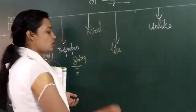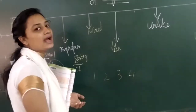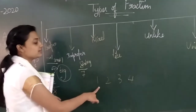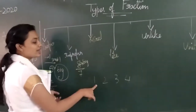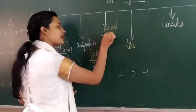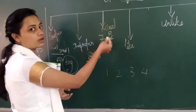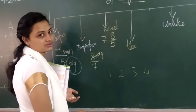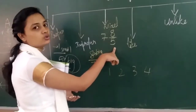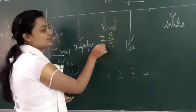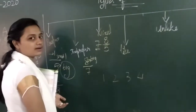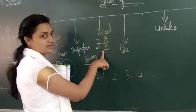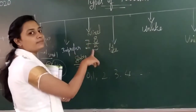Now come to mixed fraction. What is a mixed fraction? You know 1, 2, 3, 4 — all these are numbers. But a fraction is different. When you write both together — a number and a fraction next to it — that is called a mixed fraction. For mixed fraction, I should have a whole number and a fraction together. Mixed fraction means a whole number with a fraction.